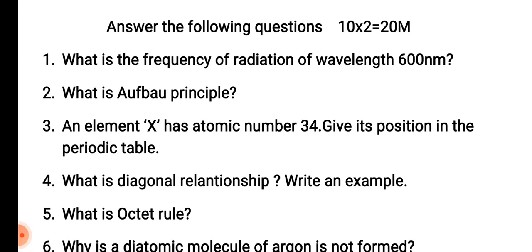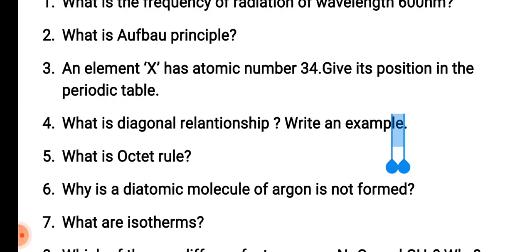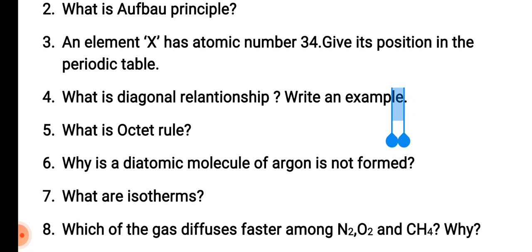Fourth question: What is the diagonal relationship? Write an example. This is from the periodic table lesson. Fifth question: What is the octet rule? Sixth question: Why is a diatomic molecule of argon not formed? This is from chemical bonding.